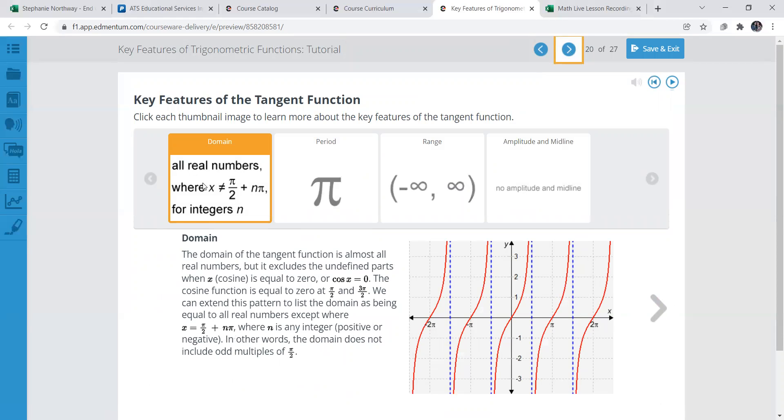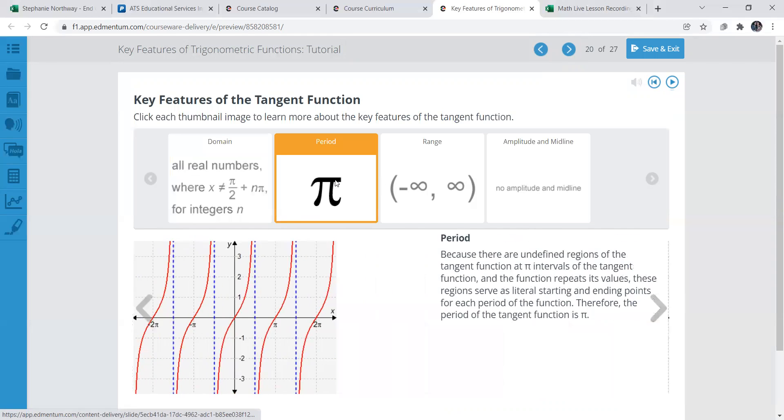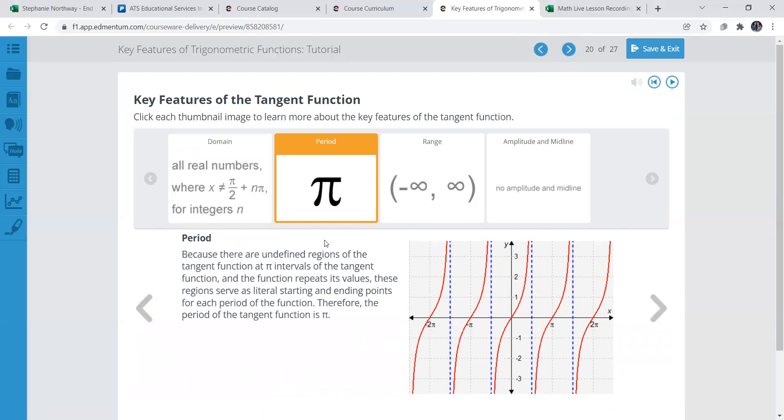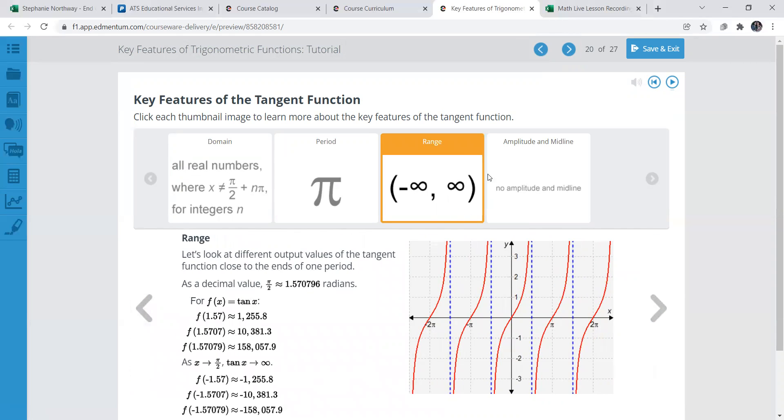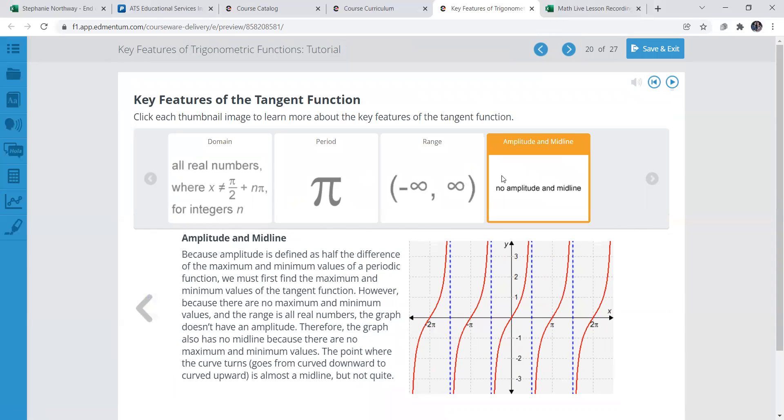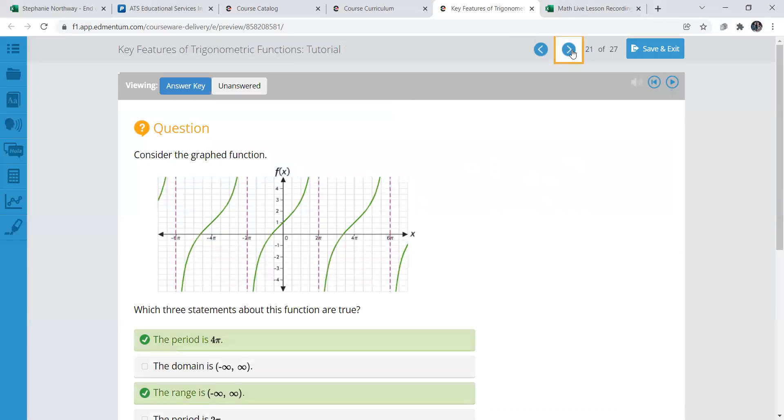Domain is all real numbers where x not equal to pi over 2 plus n pi for integers n. So this just gives you an example. We learned about period next. Range: typically you'll see negative infinity to positive infinity. Amplitude for a tangent function: typically no amplitude in midline. Different from the amplitude on sine and cosine, they're more waves. Tangent is not. It's a little bit different.